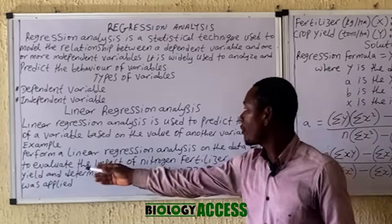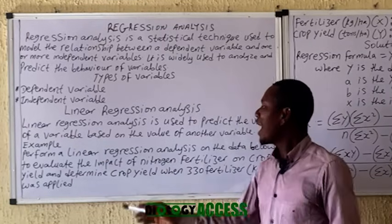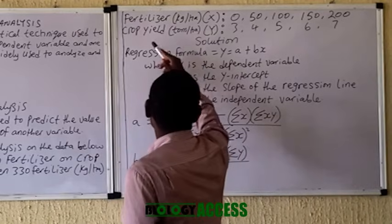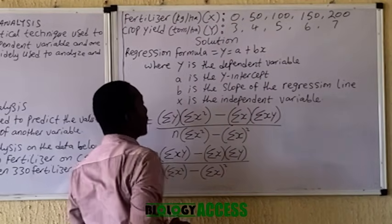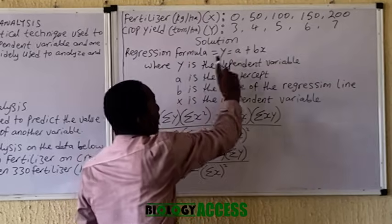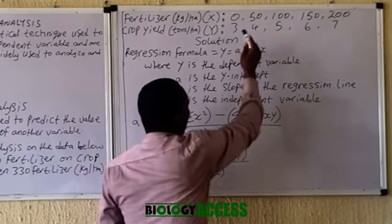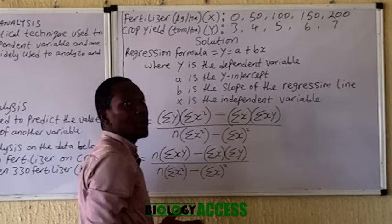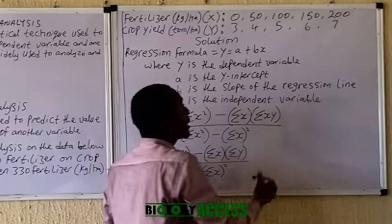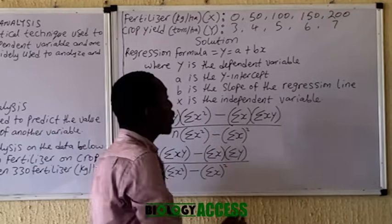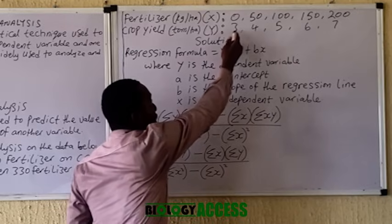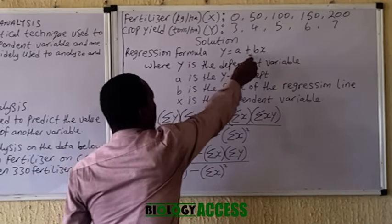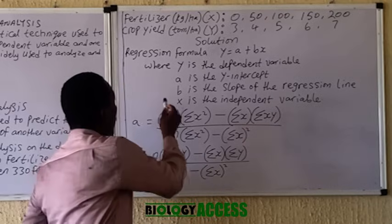You are asked to perform a linear regression analysis to evaluate the impact of nitrogen fertilizer on crop yield, and determine the crop yield when 330 kg of fertilizer per acre was applied. When no fertilizer was applied, crop yield was 3 tons per acre. When 50 kg/acre was applied, yield increased to 4; when 100 kg was applied, it increased to 5. Based on this, you create a model so you can predict crop yield for any value, even 1,000 kg.